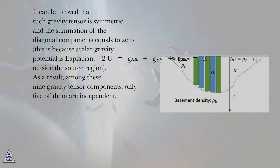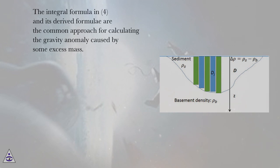As a result, among these nine gravity tensor components, only five of them are independent. The integral formula in (4) and its derived formulae are the common approach for calculating the gravity anomaly caused by some excess mass.